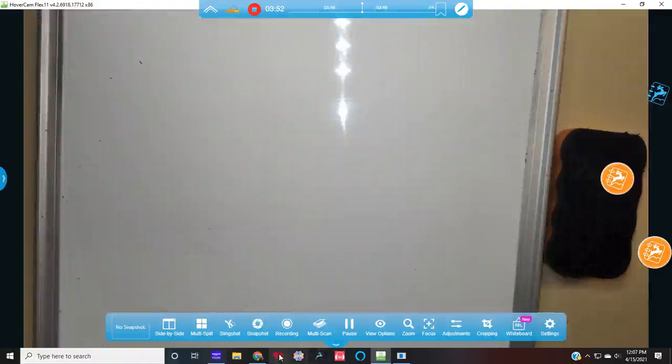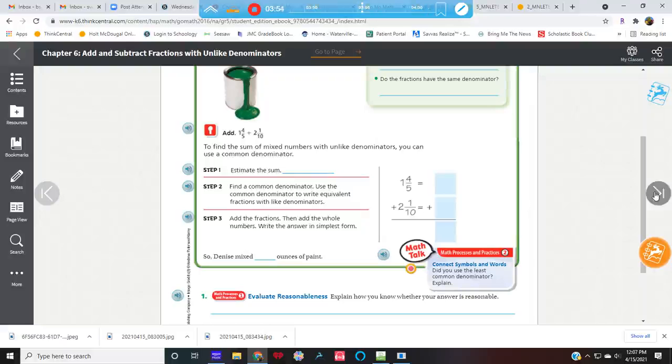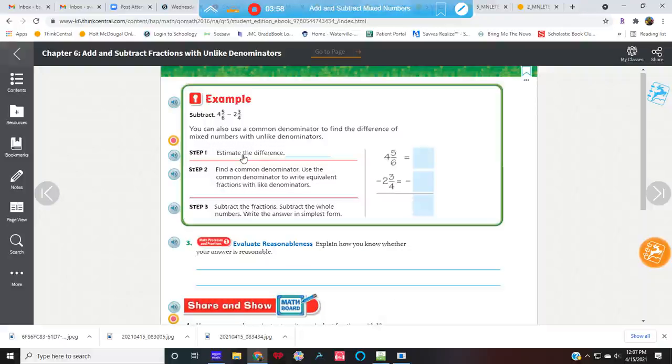So that was adding. Let's look at a subtracting one over here. So we have 4 and 5 sixths, and 2 and 3 fourths. And we are subtracting. So if we estimate this, we can do it the same way. If I estimate 4 and 5 sixths, I would say that's 5. And if I estimate 2 and 3 fourths, I would say that's 3. So 5 minus 2, I'm thinking my answer is going to be around 3. It's going to be around 3.